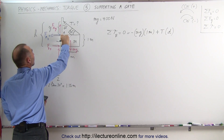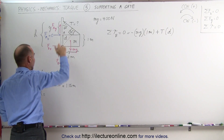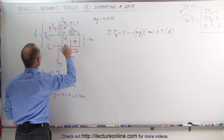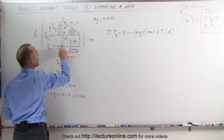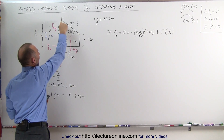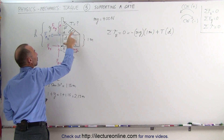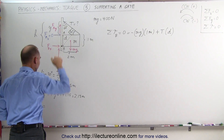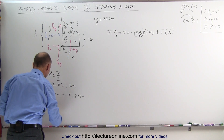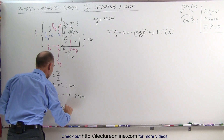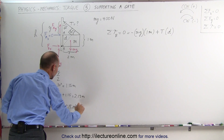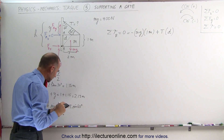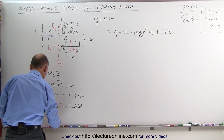So H equals the height of the gate, which is 1 meter, plus Y, which is 1.15 meters — giving H = 2.15 meters. That's the height from where the gate connects at B to where the cable connects at the top. Now D is the opposite side to the 60-degree angle with H as the hypotenuse, so D equals H times sin(60°) = 2.15 × sin(60°) = 1.87 meters.